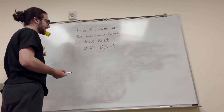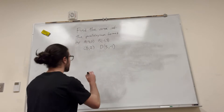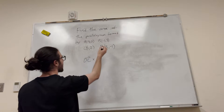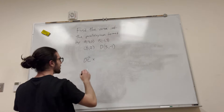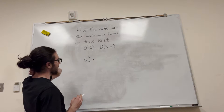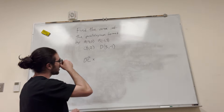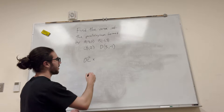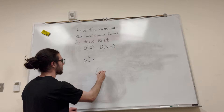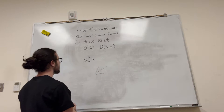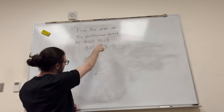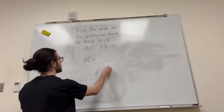We just need two vectors. I'm going to start at D. You can't do the cross product all the way across — you have to use vectors that share an endpoint. So we'll do DC crossed with DA.